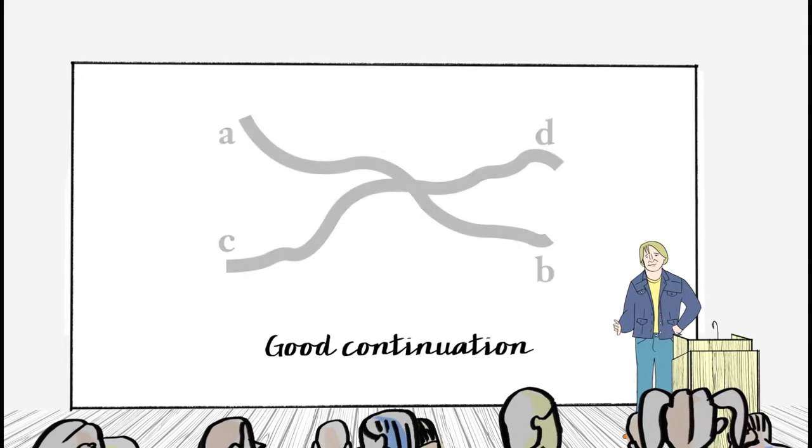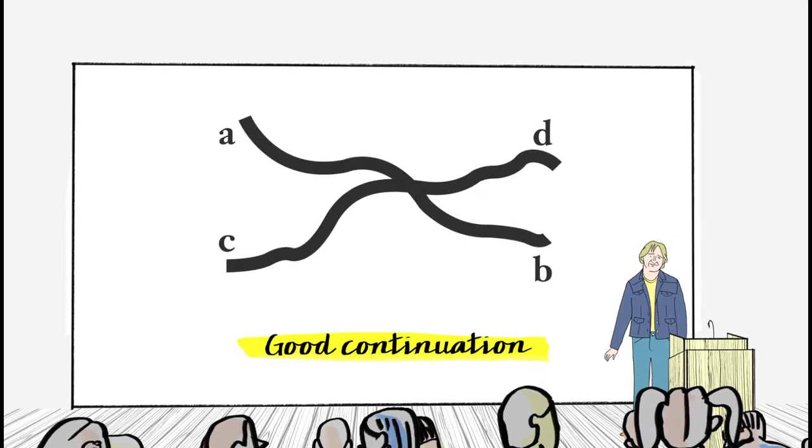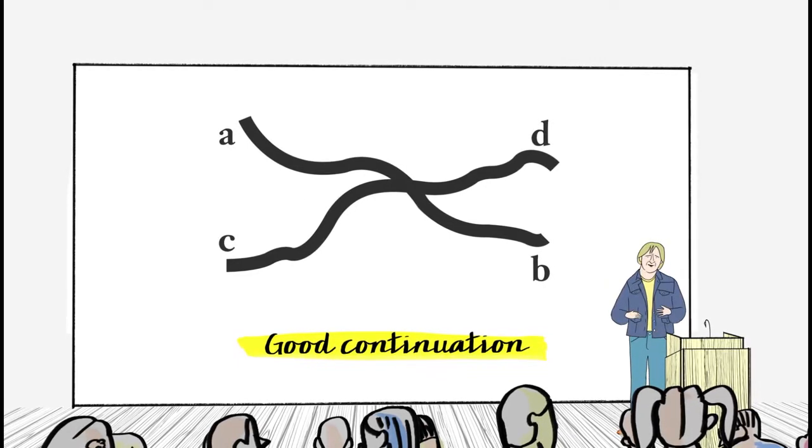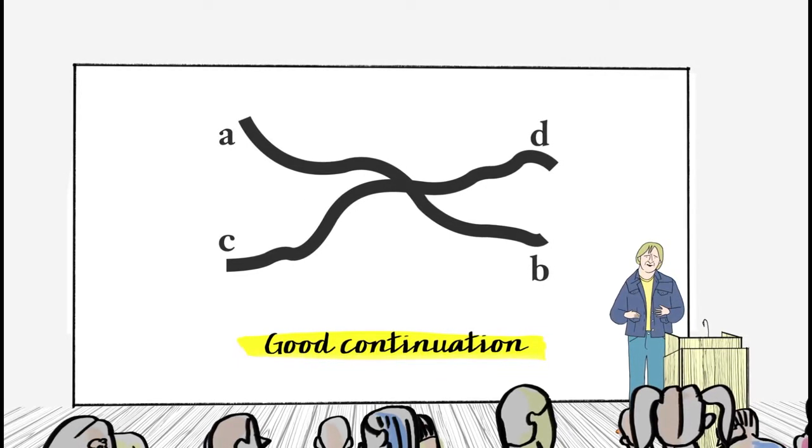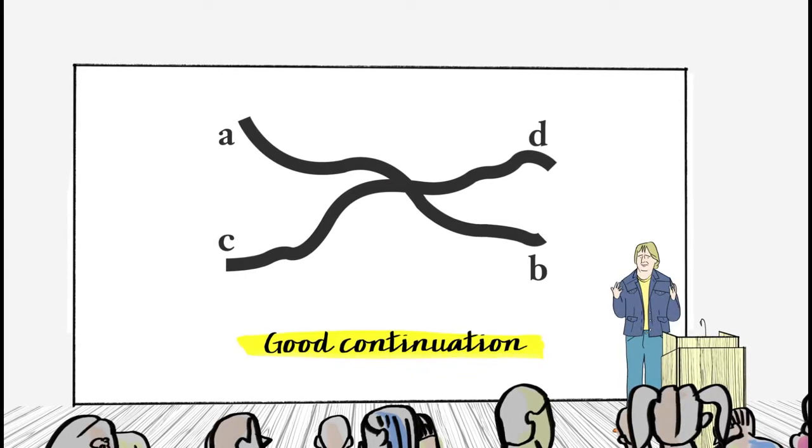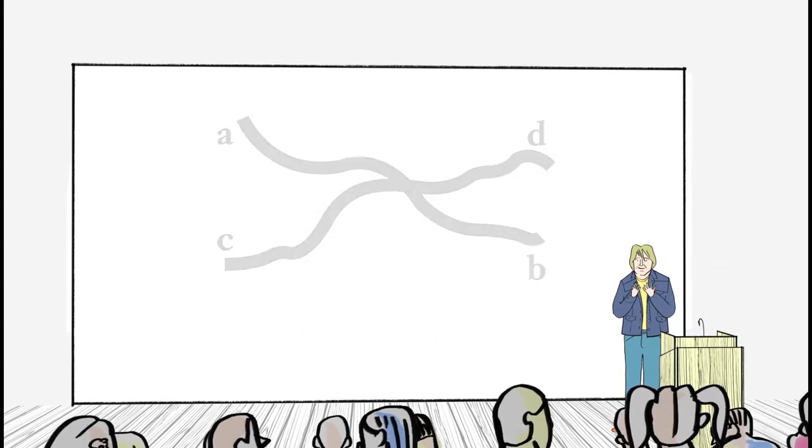Similarly, there's good continuation. So the simplest continuation of these lines has A leading to B and C leading to D. There's nothing logically wrong with saying, oh, here are two complicated lines. One goes from A to C and the other one goes from D to B. It's just not natural. We make the simplest continuation.